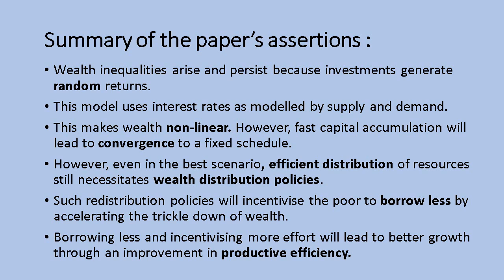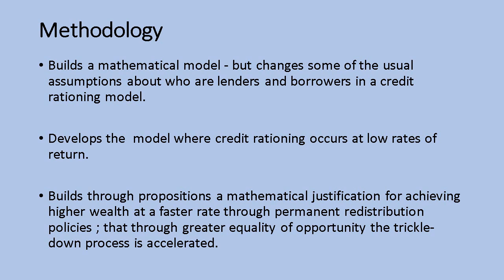The key part of the paper is that with permanent redistribution policies you can incentivize the poor to borrow less and accelerate the trickle-down of wealth through more efficient and productive growth. Through permanent redistribution policies the poor will work harder, there will be more incentivization of effort, and better growth and efficiency. In the traditional trickle-down model as seen by Aghion and Bolton, poor people do not put in a high level of effort when they are forced to share a large part of the returns of that effort with the people they've borrowed money from.